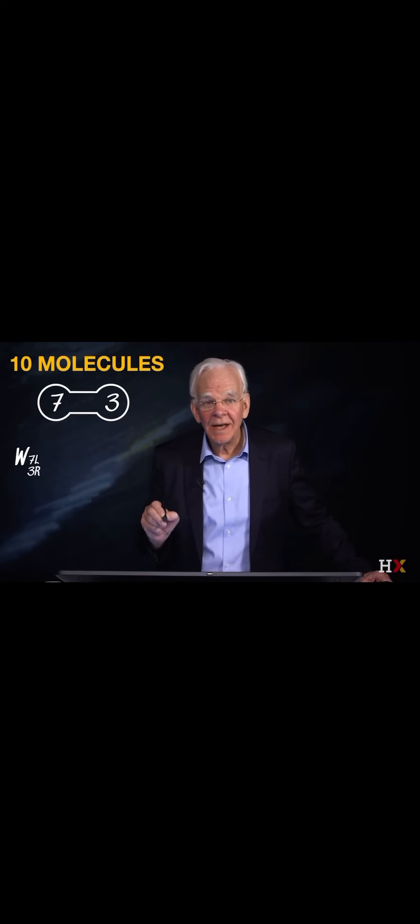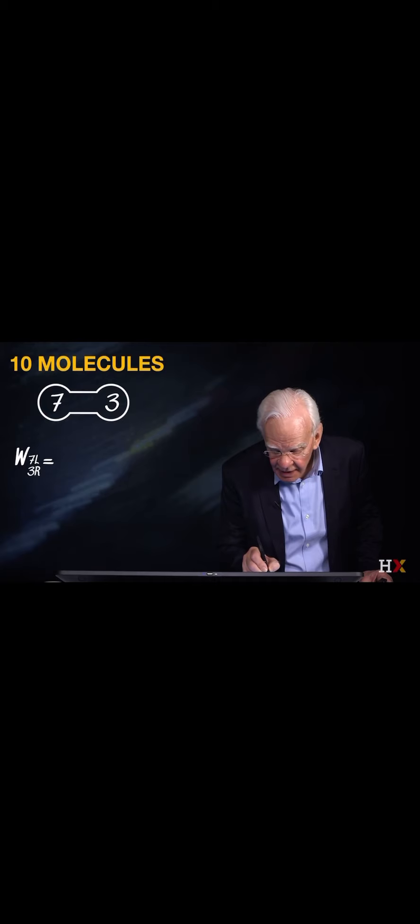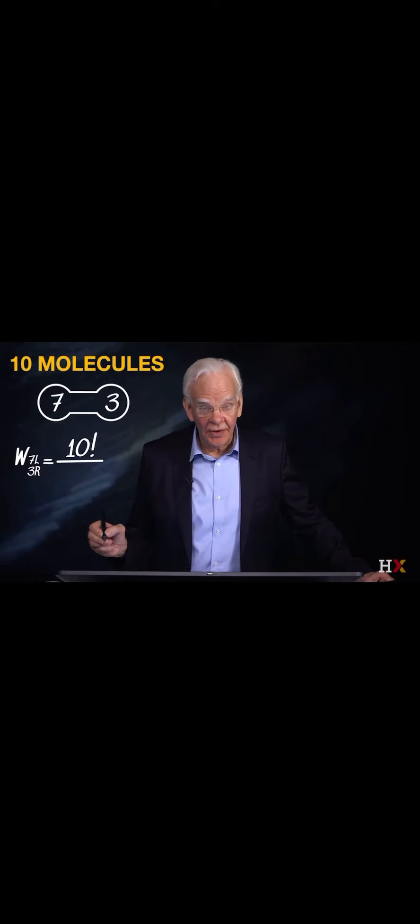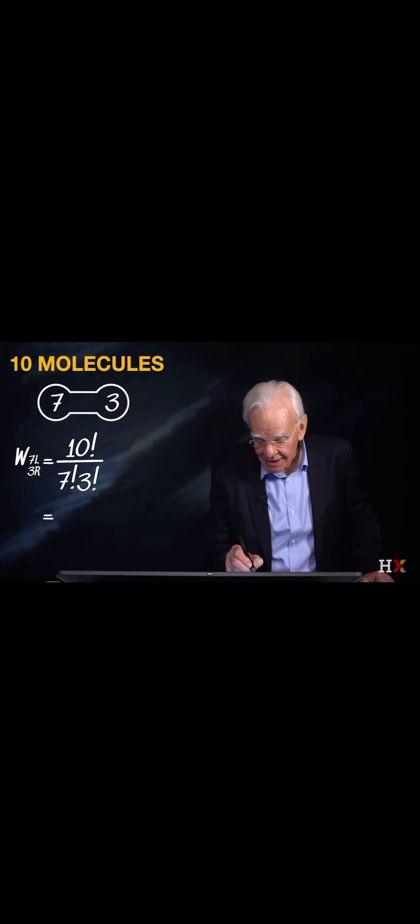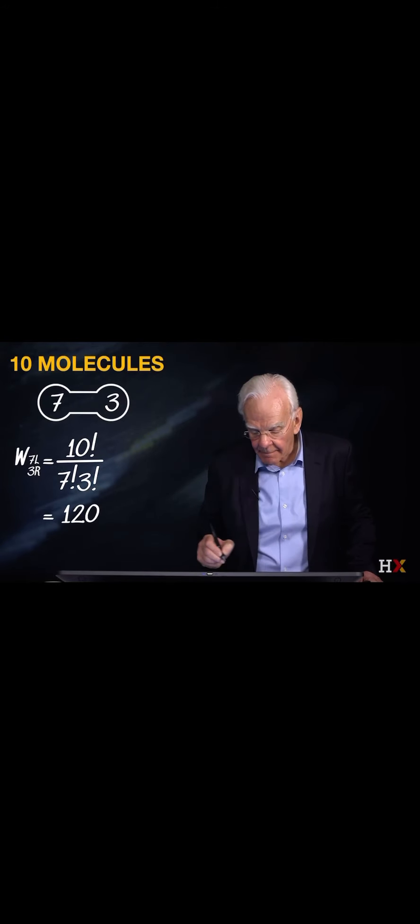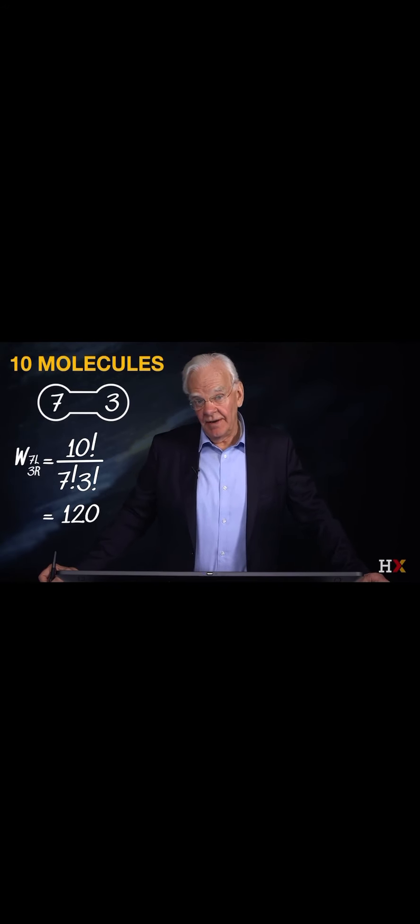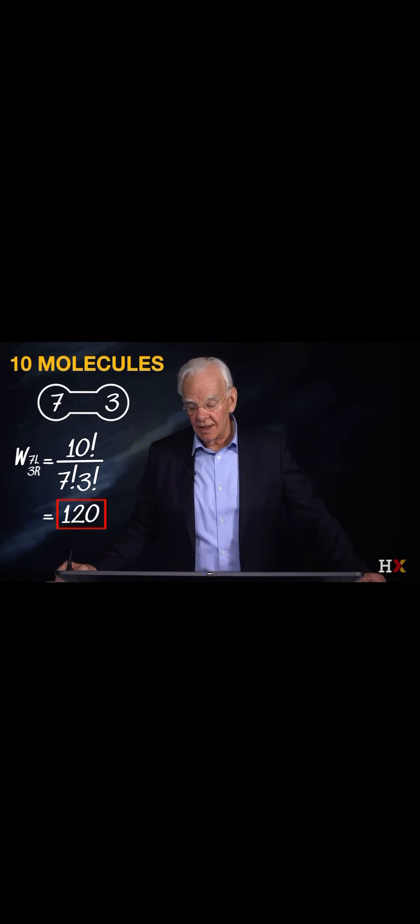We'll write that as the number of microstates with seven in the left-hand side and three in the right, but we can immediately do that calculation because the number of molecules is 10, so that's 10 factorial. The number of molecules in the left-hand chamber is seven, so that's seven factorial times the number in the right-hand side is three factorial. Well, we know exactly how to do that calculation, and that's 120 microstates available in the configuration with seven in the left and three on the right, and lo and behold, that's how many microstates there are.